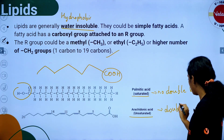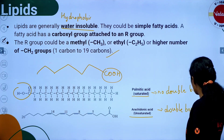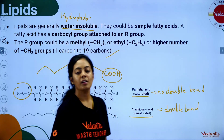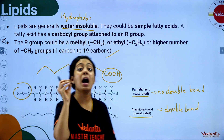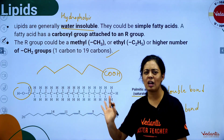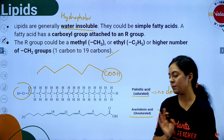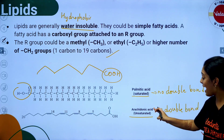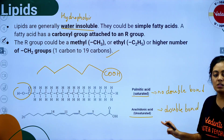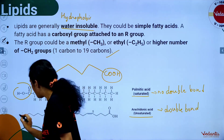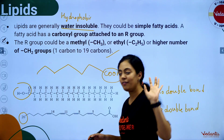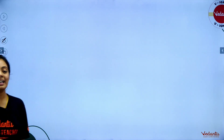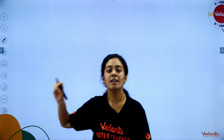Simple rule: absence of double bond means saturated, presence of double bond means unsaturated. An example of saturated fatty acid is palmitic acid. An example of unsaturated fatty acid is arachidonic acid. Arachidonic acid has 20 carbons.